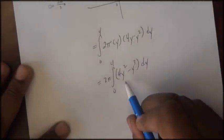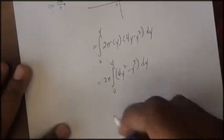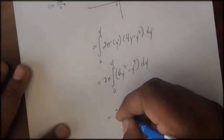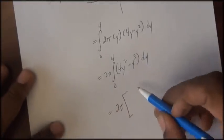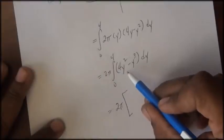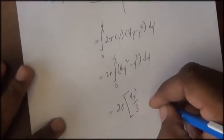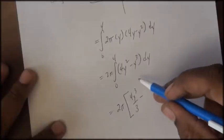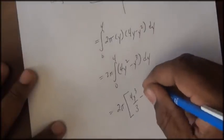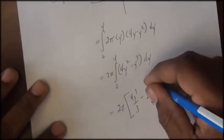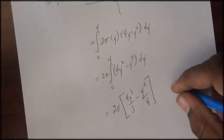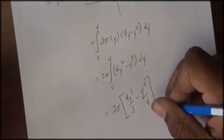Next, I'll integrate the function 4y squared minus y cubed. So we have 2π, the integral of 4y squared is 4y cubed over 3, minus the integral of y to the third, which is y to the fourth over 4. And our limits of integration are from 0 to 4.